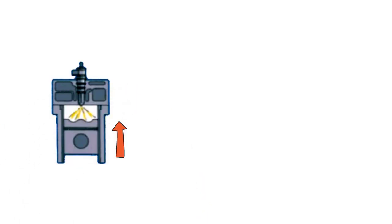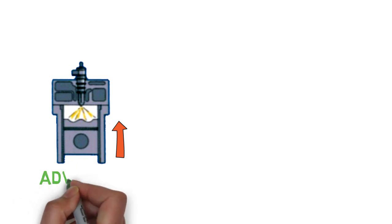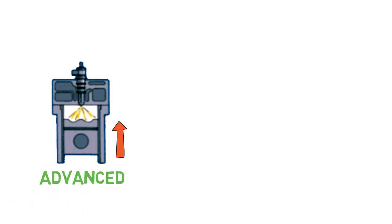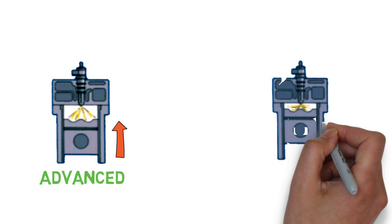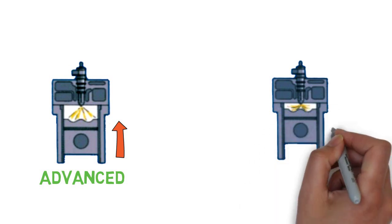Advanced timing means that fuel is injected earlier in the compression cycle. Normal timing means that fuel is injected later in the compression cycle.